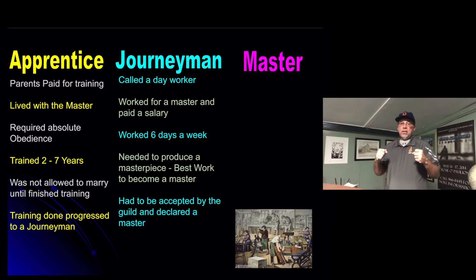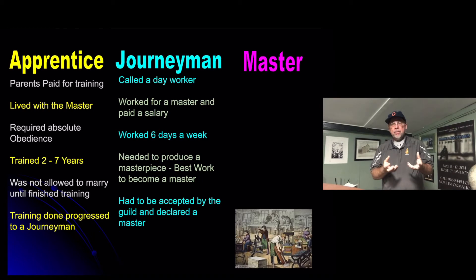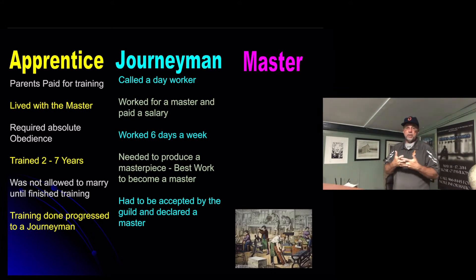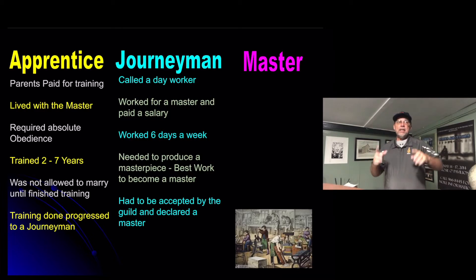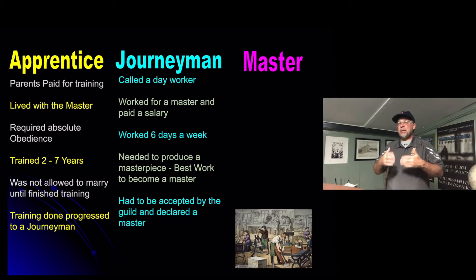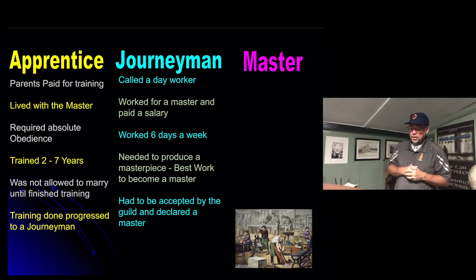Once that masterpiece was approved by your master, it was taken to the guild, which would then vote on it. If approved, you would receive master status. It took a period of time — most of the time you wouldn't become a master until you were in your 30s. You had to be accepted by the guild and declared a master. If you went to any other town, you took that recognition and symbol from the guild stating this person is a master in this trade, and other guilds in other towns would accept it.